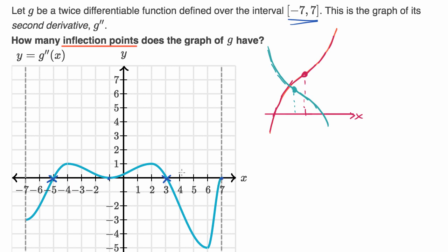So to answer the question, how many inflection points does the graph of g have? It has two inflection points, looking at the second derivative. Now we know the answer — but why does that make sense? Why do you have to cross the x-axis?